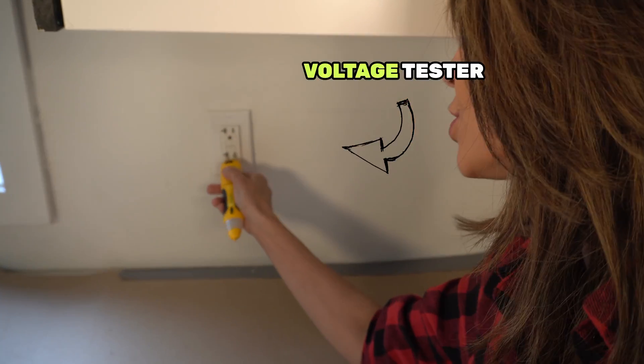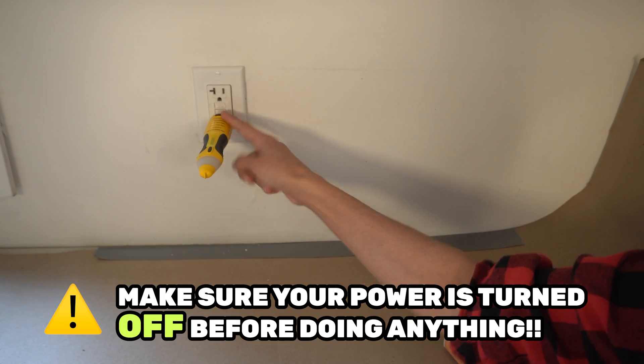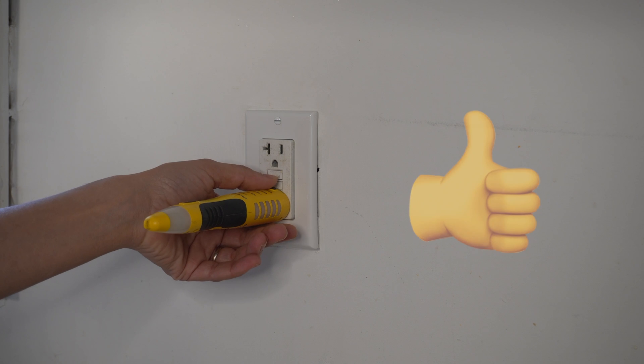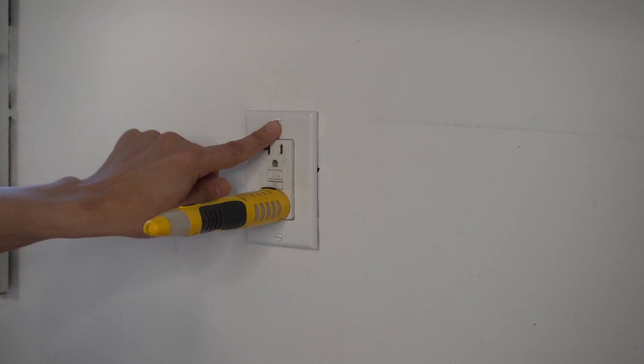Whatever you choose, you're going to learn how to install it and most importantly check your work with one of these. Let's get started. Now the first thing you always want to do is test that your power is turned off at the breaker. There are no lights on the side, we are safe to open up our receptacle cover.